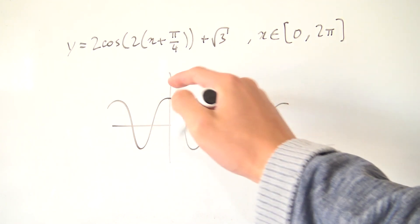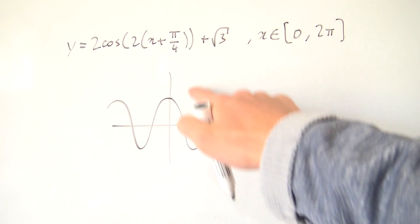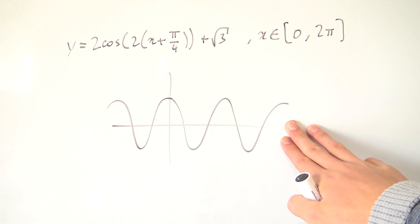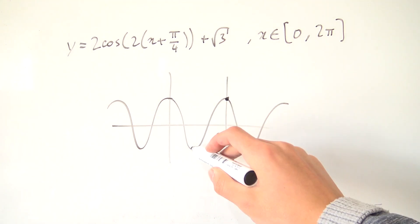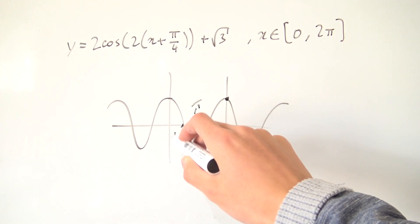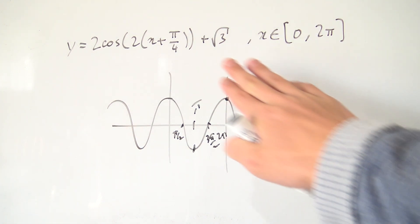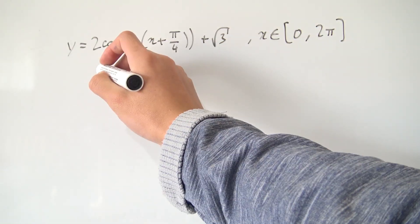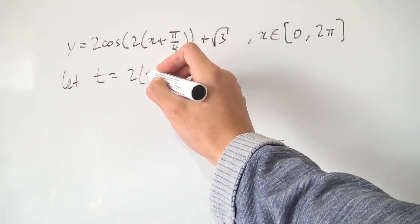It starts at 1 and goes down and up and just repeats. So it would be nice if we can transform all of this junk into our original cosine graph, because we all know how it behaves — it has a period of 2π, a minimum at π, x-intercepts at π/2 and 3π/2 and so on. So we want to transform our equation a little bit. The best way I've thought of is by doing a simple substitution.